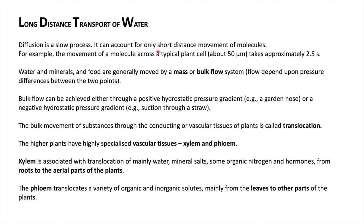Diffusion is a slow process and it occurs only over short distances. Water molecules travel only 50 micrometers in 2.5 seconds. So if a plant's height is 400 or 500 meters, you can imagine how much time — or how many years — it would take for water to travel that distance. Water, minerals, and food generally move by bulk flow, which can be achieved through positive hydrostatic pressure, like a garden hose — a tube you use to give water to plants — or through negative hydrostatic pressure, similar to creating suction in a straw.